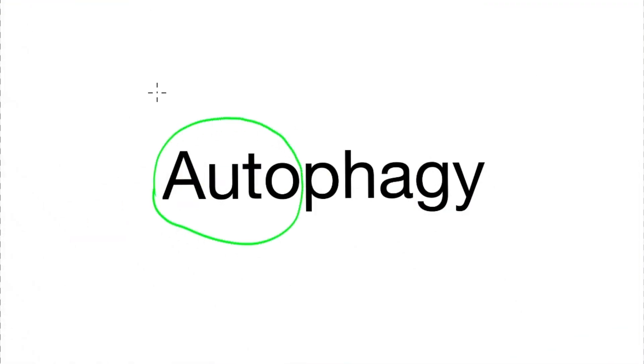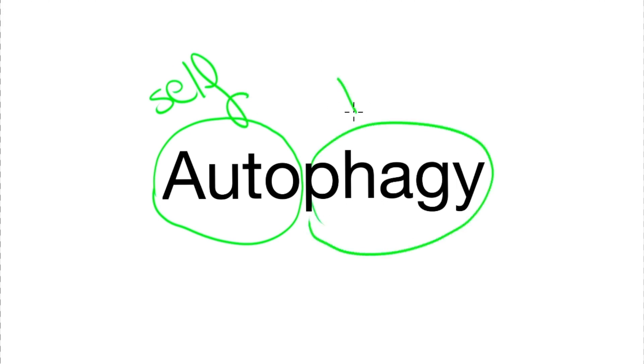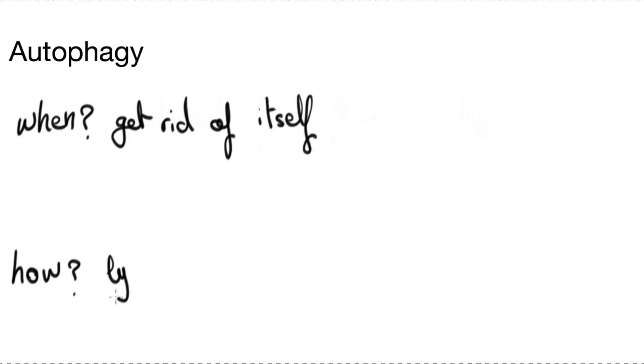Autophagy consists of the words auto, meaning self, and phagy, meaning to eat. Autophagy is a process in which a cell eats its own contents. In other words, autophagy happens when the cell decides that certain cytoplasmic contents of its own are actually problematic, and therefore it gets rid of them by fusing them into the lysosomes.